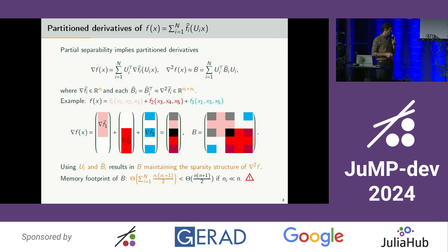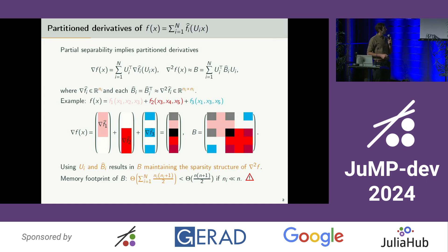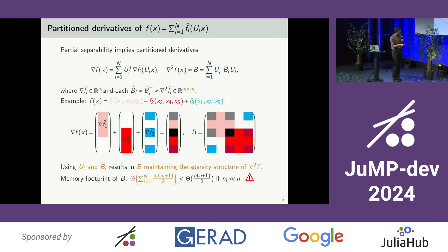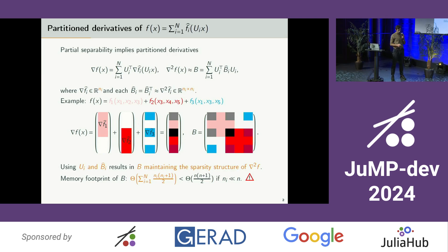Having the knowledge of Ui results in the partition matrix B, maintaining the sparsity structure of the Hessian of f. What is particularly interesting is that the memory footprint of the partition matrix B is not O((n+1)/2), but on the order of the sum of ni(ni+1)/2, which is a lot smaller than (n+1)/2 in the case where the element dimension is much smaller than the total problem size.